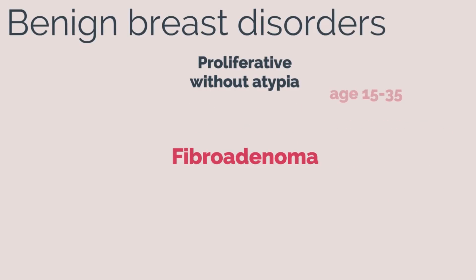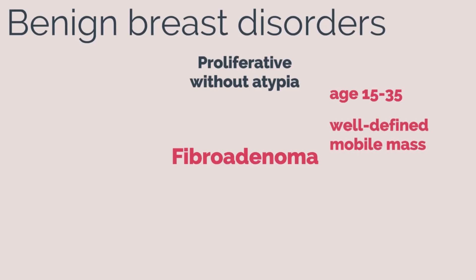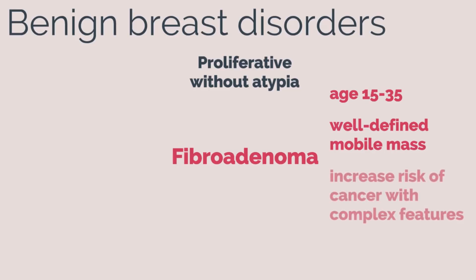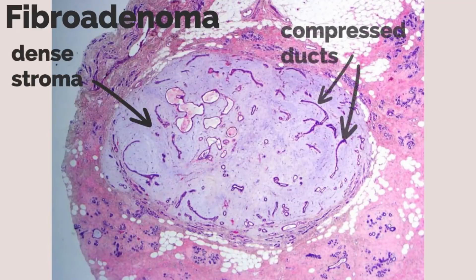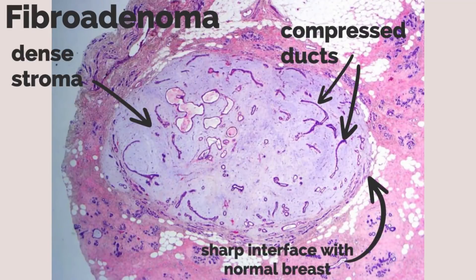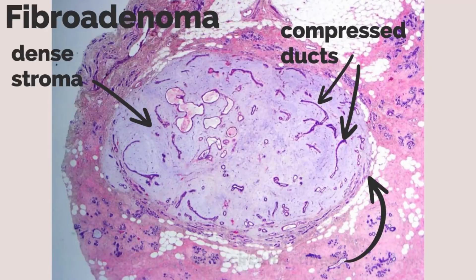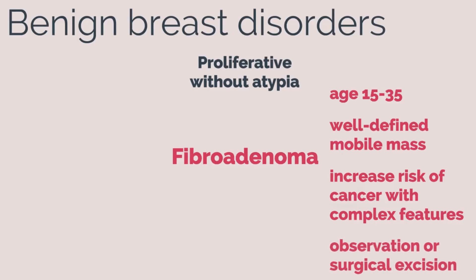Fibroadenomas are common from age 15 to 35 and present as a well-defined mobile mass. They generally do not increase the risk of cancer, but can slightly increase risk if they have complex features. Microscopically, there is a dense stromal component with compressed ducts and a sharp interface with normal breast tissue, making the mass well circumscribed. Fibroadenomas can be observed or surgically excised.